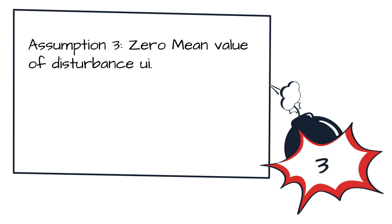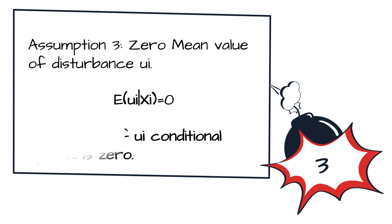The third assumption states that there is a zero mean value of disturbance ui. Given the value of x, the mean or expected value of the random disturbance term ui is zero. Technically, the mean value of ui is zero, written as E(ui | xi) = 0.